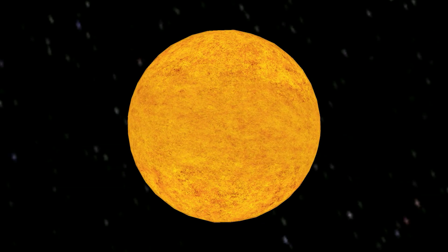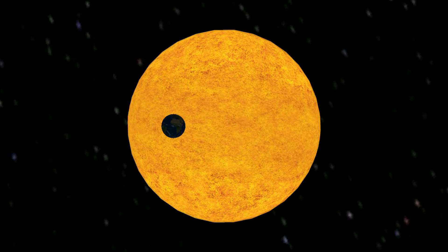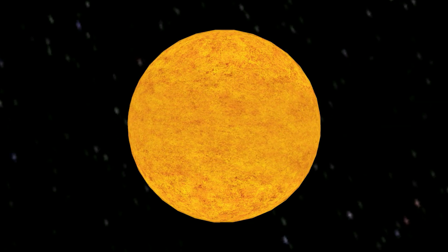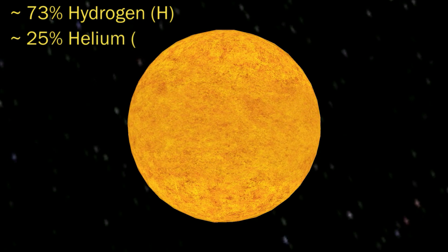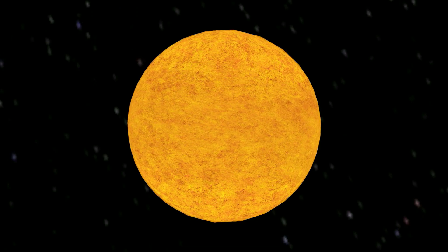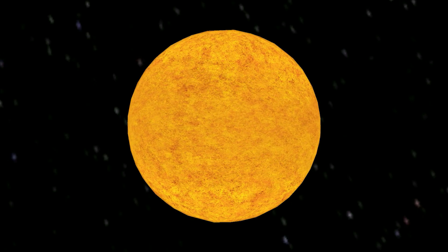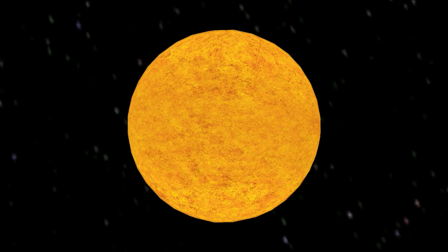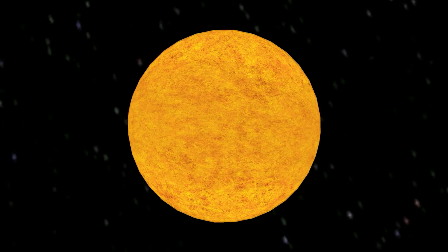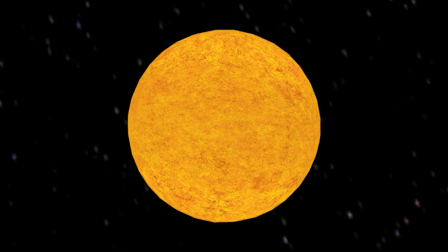Something interesting about the Sun's rotation around its own axis is that it does not happen uniformly throughout. The Sun consists of hot plasma, of which about 73 percent is hydrogen and 25 percent helium. The plasma experiences constant turbulence — it takes the plasma at the equator about 25.6 days to rotate around the axis, while the plasma at the poles takes about 33.5 days.